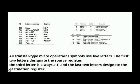All transfer-type micro-operation names use 5 letters. The first 2 letters designate the source register, the third letter is always T, and the last 2 letters designate the destination register.